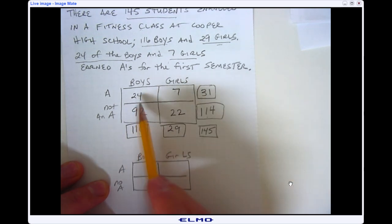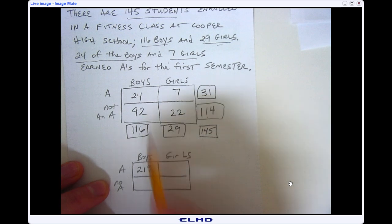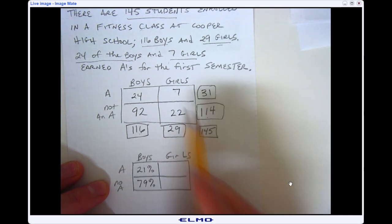So then what I'm going to do is I'm going to take 24 divided by 116, if I round that that's about 21 percent. If I take 92 divided by 116 that would be about 79 percent. 7 divided by 29 would give me 24 percent and then 22 divided by 29 is 76 percent.